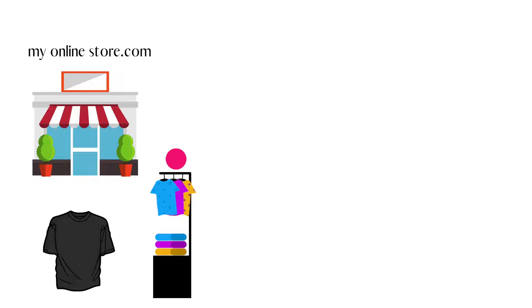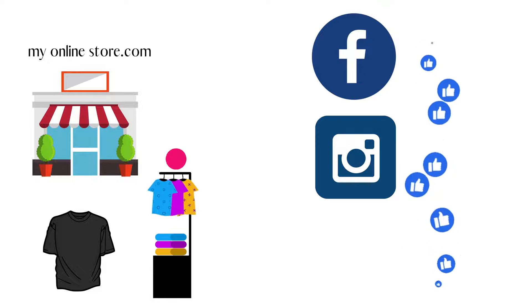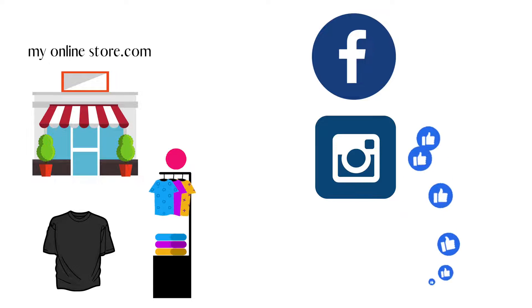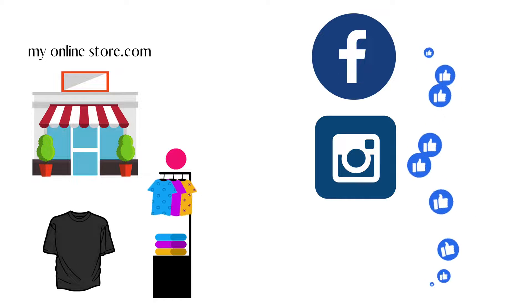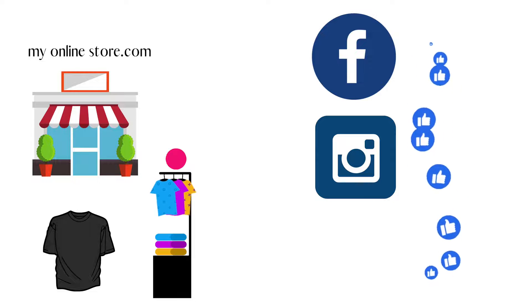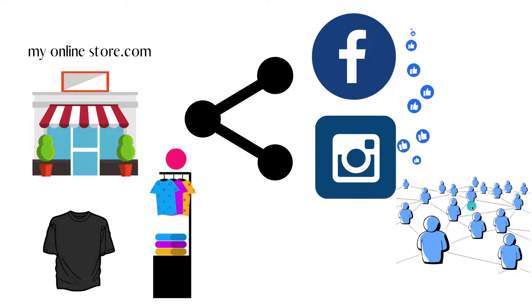Let's say you have a store and you want to sell your products online, so you go ahead and create a website for your store. Now you already have a Facebook page, you already have an Instagram page, and you want to connect your products to your Facebook and Instagram page so that you don't have to list multiple times — all you have to do is just list one time on your store and then sync your products to Facebook and Instagram.